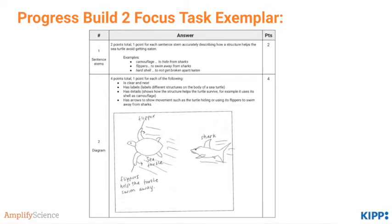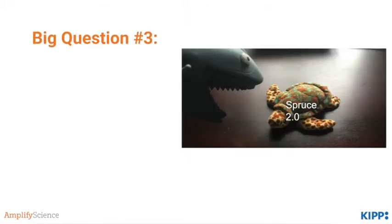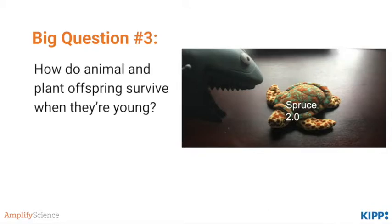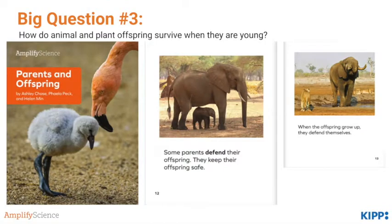That brings up our next question: how do animal and plant offspring defend themselves when they are young? Students notice that there are little Spruce 2.0s swimming around near sharks — how do they survive? Students begin to answer this question by reading the book Parents and Offspring. They watch videos first of parents defending their offspring, and then some of the strategies offspring use to help themselves survive.